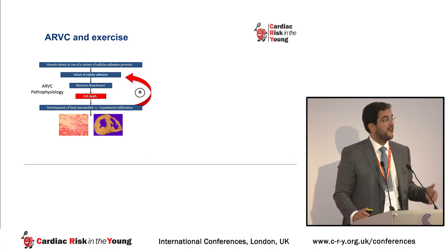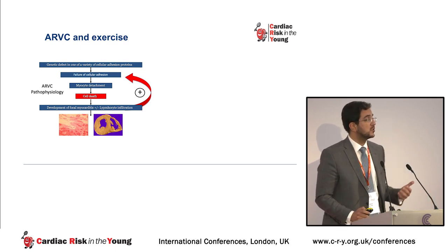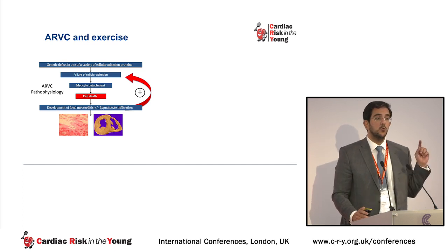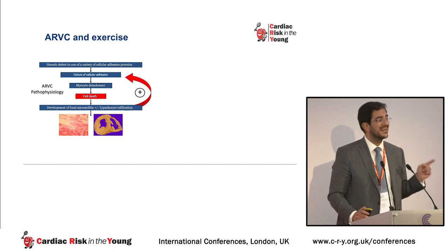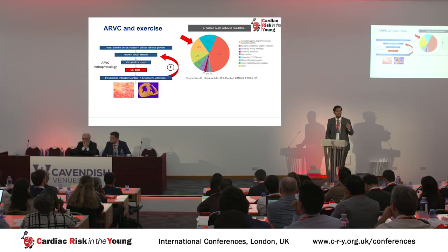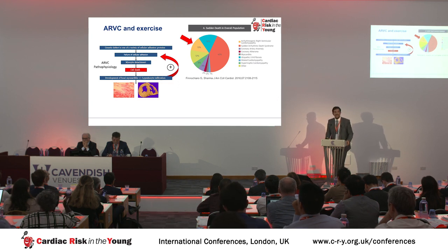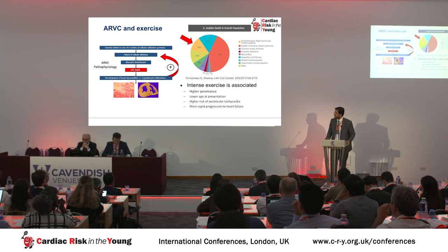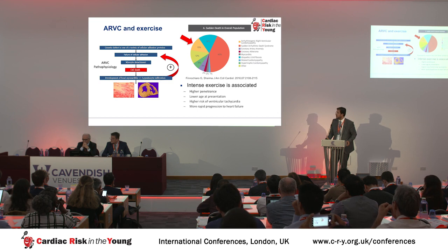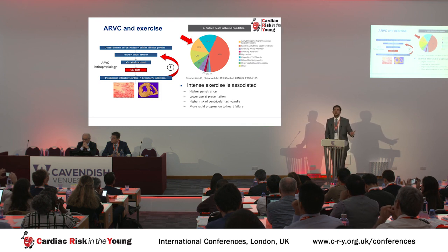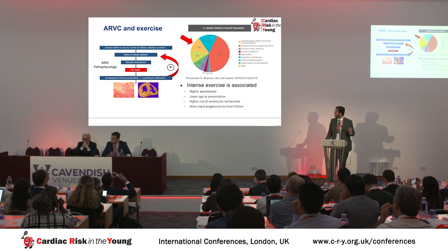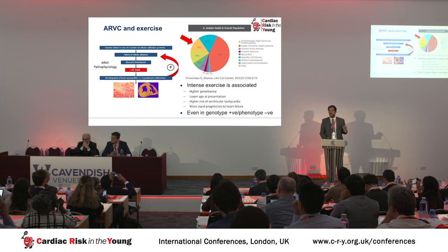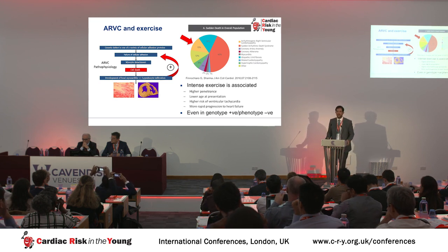Essentially, you've got fibro-fatty replacement of heart muscle and predisposition to arrhythmias. If you want one condition clearly associated with sudden cardiac death during exercise in athletes, that's arrhythmogenic right ventricular cardiomyopathy. Intense exercise is associated with high penetrance, lower age of presentation, high risk of ventricular arrhythmias, and more rapid progression to heart failure — and that's even in genotype-positive, phenotype-negative individuals, those who have not yet expressed the disease.